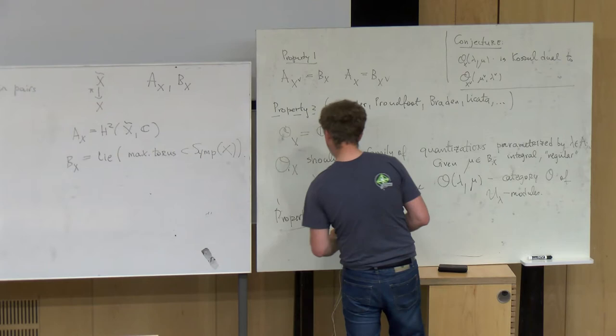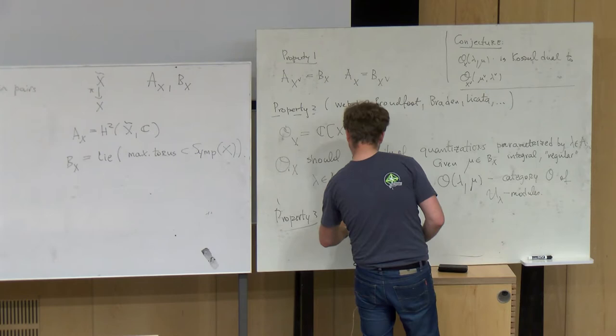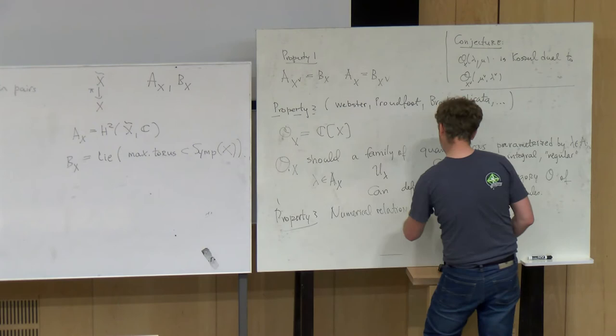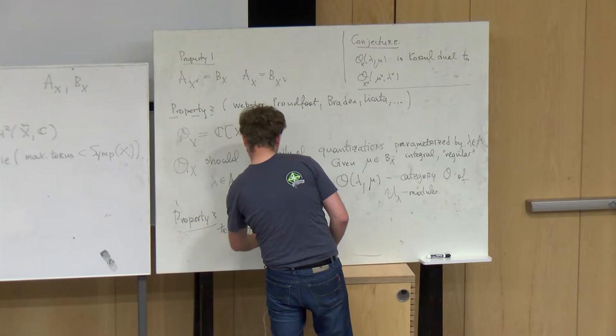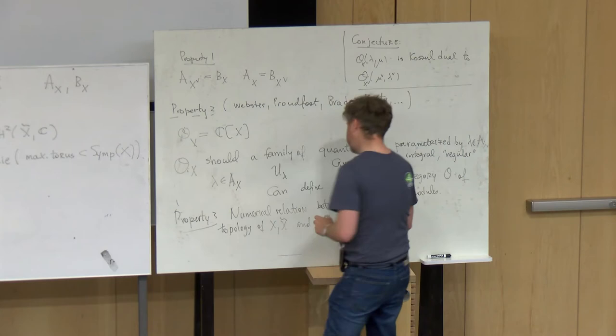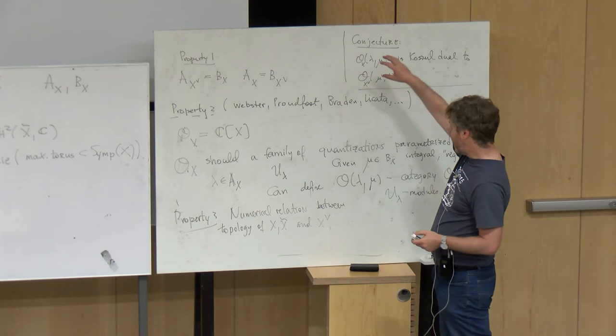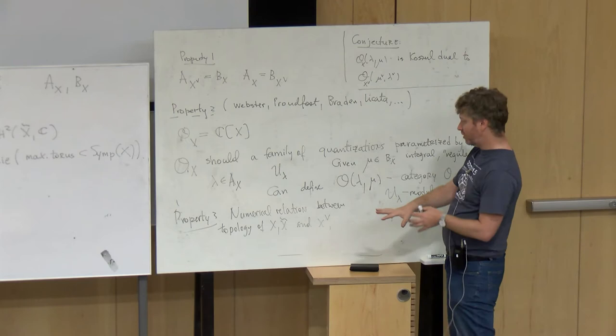Given mu inside B(X) which is integral and in some sense regular, you can define category O for representations of this thing: O(lambda, mu), which is the category O of U_lambda modules. The conjecture — proved in many cases — is that this category is Koszul dual to the analogous category for X-check. In particular, for the Springer resolution, there's a theorem of Soergel which says the category only depends on the Weyl group, and a theorem of Beilinson-Ginzburg-Soergel which says the category is Koszul self-dual, so the category for G is Koszul dual to the category for G-check.